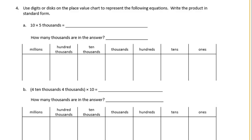Number 4: use digits or disks on the place value chart to represent the following equations and write the product in standard form. Part A is ten times five thousands. Let's draw the five thousands — multiplying by ten moves each one place value up, and we end up with five ten thousands, or 50,000. How many thousands are in the answer? Fifty, because five times ten is fifty.